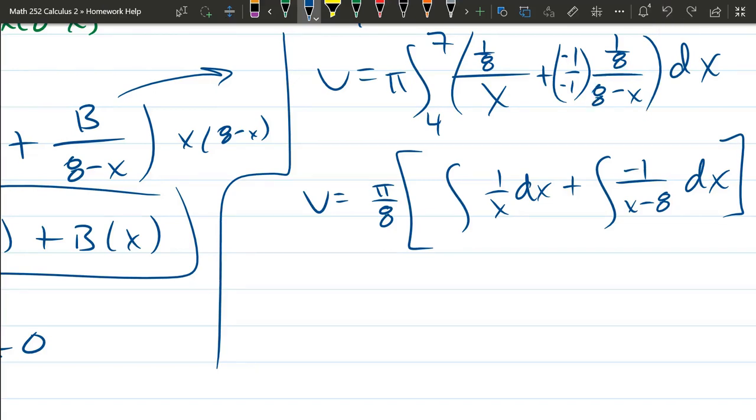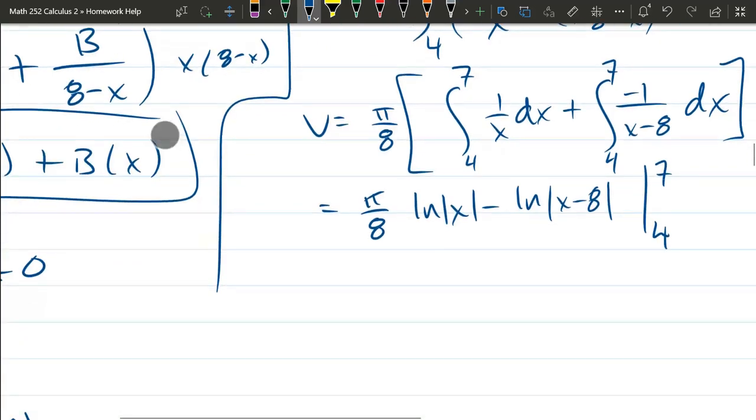I can squeeze that in here. And then that would make this negative 1 on the top. You could have done a u sub if you left it like this, and your u would be 8 minus x. du would be negative dx. Totally reasonable to do a u sub on that and not do this algebra that I just did. Now, in this form, they're both natural log. You don't really need to do a u sub if you've done enough antiderivatives at this point in your life. I believe these are absolute values, which will come into play, which will not come into play for us, but just in case.